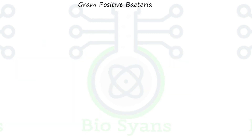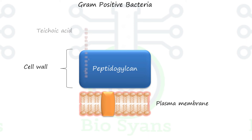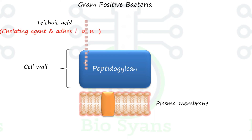Gram-positive bacteria: the cell wall is thick because it has many layers of peptidoglycan. There is no outer membrane. Running perpendicular to the peptidoglycan is a group of molecules called teichoic acid. Teichoic acids are linear polymers of glycerol and ribitol joined by phosphate, sugar, and amino acids.